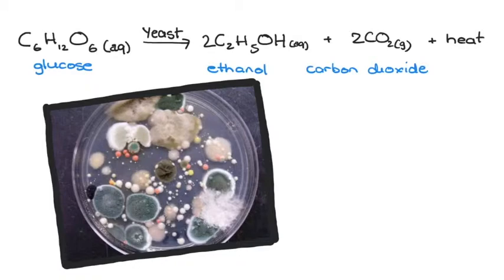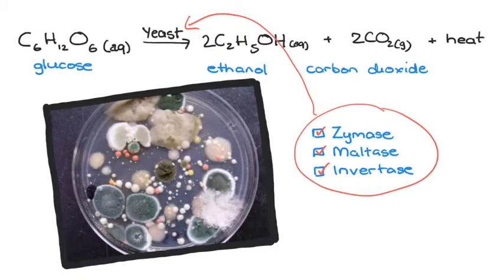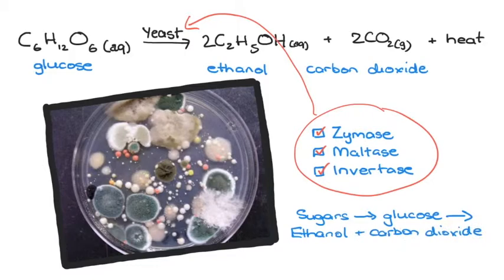These enzymes such as zymase, maltase, and invertase catalyzed a complex series of biochemical reactions which you don't really need to know, in which the sugars were ultimately converted to glucose and then to ethanol and carbon dioxide.